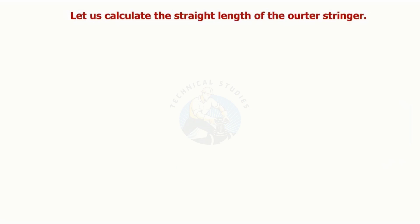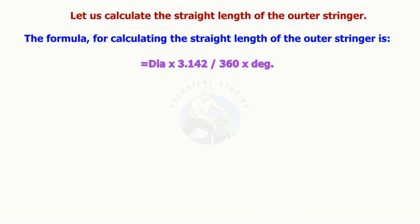Let us calculate the straight length of the outer stringer. The formula is: diameter multiply pi, divide by 360, multiply by the including angle. The length of the outer stringer is 4,420 millimeters.